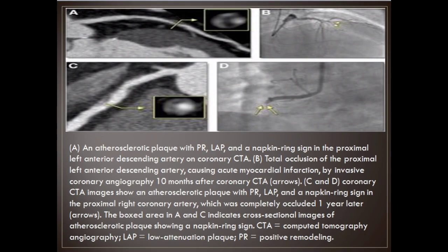Imaging examples: (a) an atherosclerotic plaque with positive remodeling (PR) and a napkin ring sign in the proximal left anterior descending artery on coronary CTA; (b) total occlusion of the proximal left anterior descending artery causing acute myocardial infarction by invasive coronary angiography 10 months after coronary CTA. (c) and (d) coronary CTA images show an atherosclerotic plaque with low attenuation plaque (LAP) and a napkin ring sign in the proximal right coronary artery, which was completely occluded one year later. CTA = computed tomography angiography; LAP = low attenuation plaque; PR = positive remodeling.